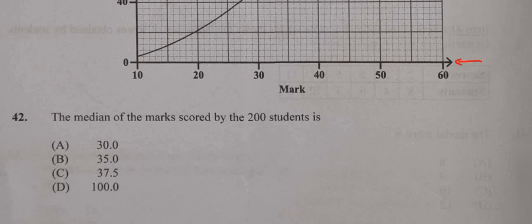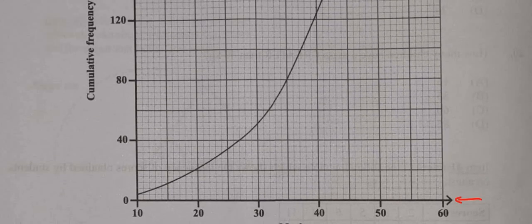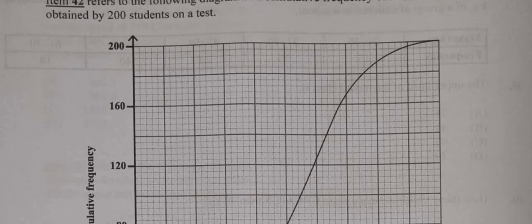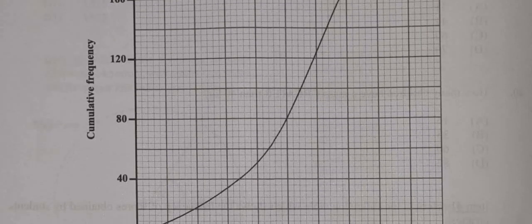But what we want to do first is find the position of the median, and so we'll need to use the y-axis, the vertical axis, which is the cumulative frequency. Now we're talking about 200 students, so the highest cumulative frequency is 200. To find the median, we find half of 200, which is 100.